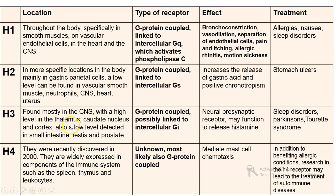H3 receptors are found mostly in the CNS, with high levels in the thalamus, caudate nucleus, and cortex. Low levels are also detected in the small intestine, testes, and prostate. They are G protein-coupled receptors, possibly linked to intracellular Gi protein. The effects of H3 receptors involve neural presynaptic activity and may function to regulate histamine release.